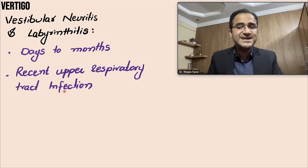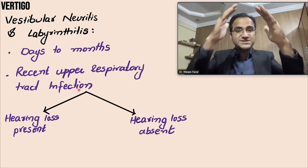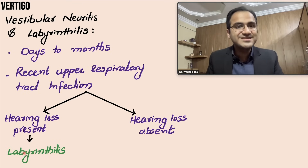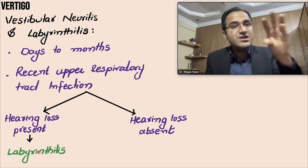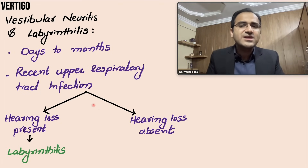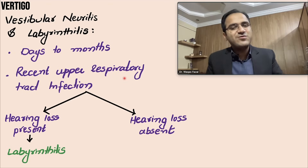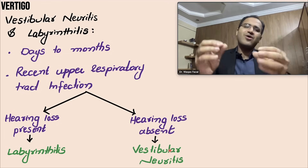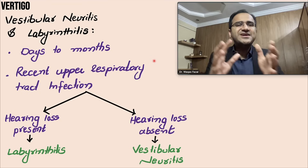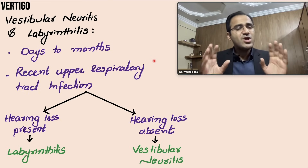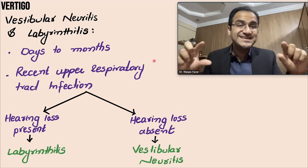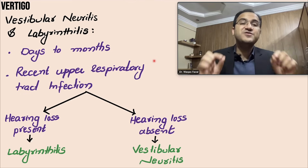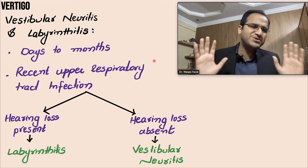To differentiate vestibular neuritis from labyrinthitis: if hearing loss is present, that points toward labyrinthitis because the cochlea is involved. In vestibular neuritis the cochlea is spared and the nerve is inflamed, so hearing loss is usually absent. Both are self-resolving, but for symptomatic management you can give betahistine 8 mg (brand name Serc) or prochlorperazine 5 mg (brand name Stemetil). These conditions will resolve within a few days.